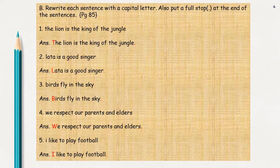First is: the lion is the king of the jungle. As you can see, the first letter is not capital and there is no full stop at the end of the sentence. So in the answer, you have to write the first letter T as capital, write the sentence as it is, and at the end of the sentence, put a full stop.